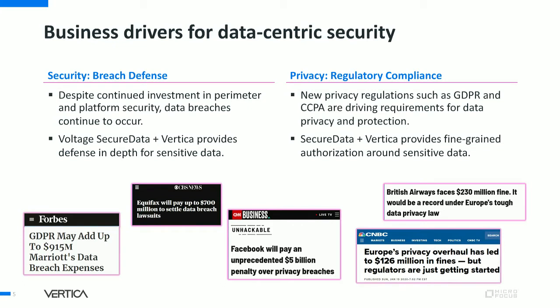Now that we've seen many big-ticket breach examples in the news and their impact to business, regulators have stepped up, and regulatory compliance is now a hot topic in data privacy. Regulations such as GDPR came online in 2018 for the EU. CCPA came online just this year for California and is the de facto standard for the United States as organizations look at best practices for regulatory compliance around data privacy and protection. These give massive new rights to consumers but also obligations to organizations to protect personal data. Secure Data plus Vertica provides fine-grained authorization around sensitive data.